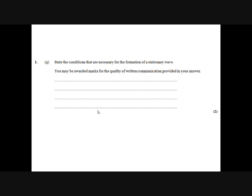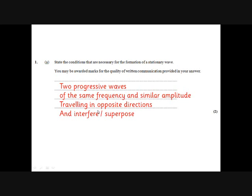But how is that stationary wave formed? Because you normally think about waves moving, a way of transferring energy. Well it's formed because you've got two progressive waves which have got the same frequency and similar, ideally identical, but similar amplitude and those two waves are travelling in opposite directions and they interfere or superpose with each other.